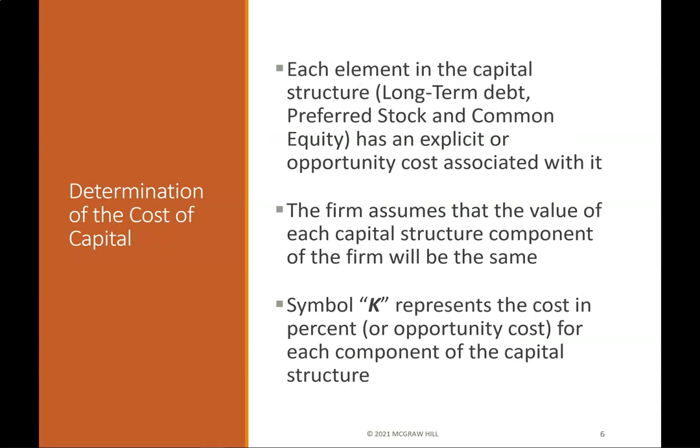Determination of the cost of capital: Each element in the capital structure — long-term debt, preferred stock, and common equity — has an explicit or opportunity cost associated with it. The firm assumes that the value of each capital structure component will be the same. The symbol K represents the cost in percent or opportunity cost for each component of the capital structure.